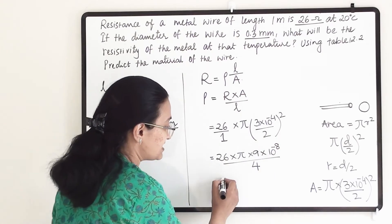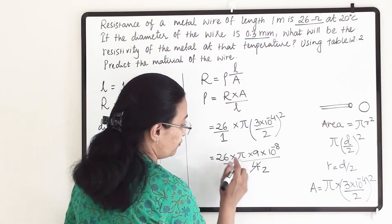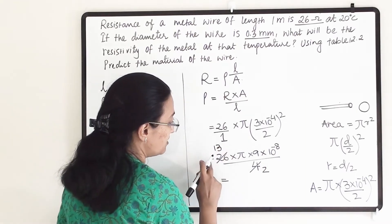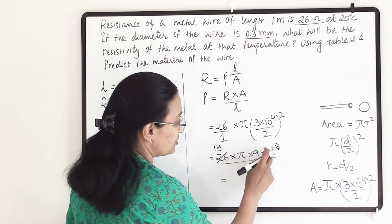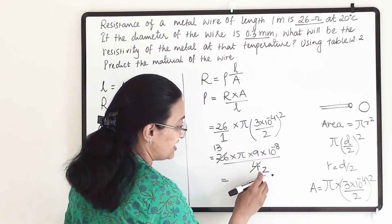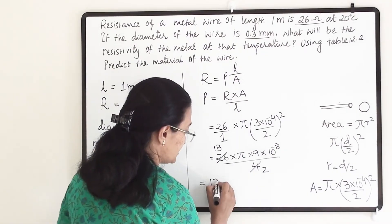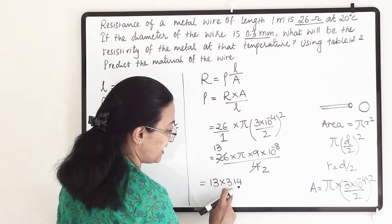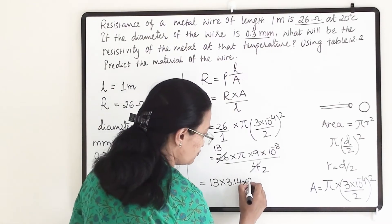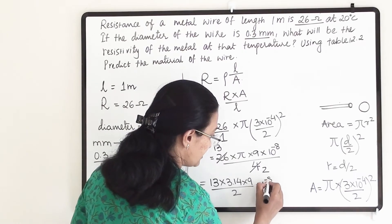As an answer I get 13 into 9 into 10 raise to minus 8 divided by 2 in multiplication with pi. When I solve this: 13 into 3.14 into 9 divided by 2 in multiplication with 10 raise to minus 8.